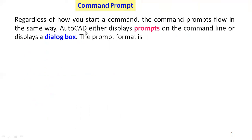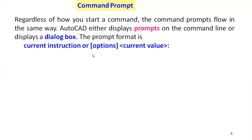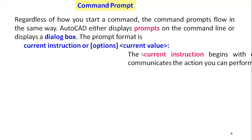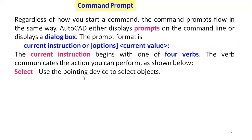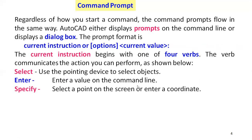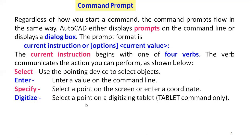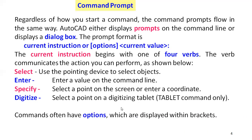AutoCAD displays prompts on the command line in the format of current instruction or current value. The current instruction begins with a verb to communicate the action you can perform — for example, 'select' uses a pointing device to select an object, or you can enter values on the command line. You can specify a point on the screen or enter coordinates, and commands often have options displayed within brackets.